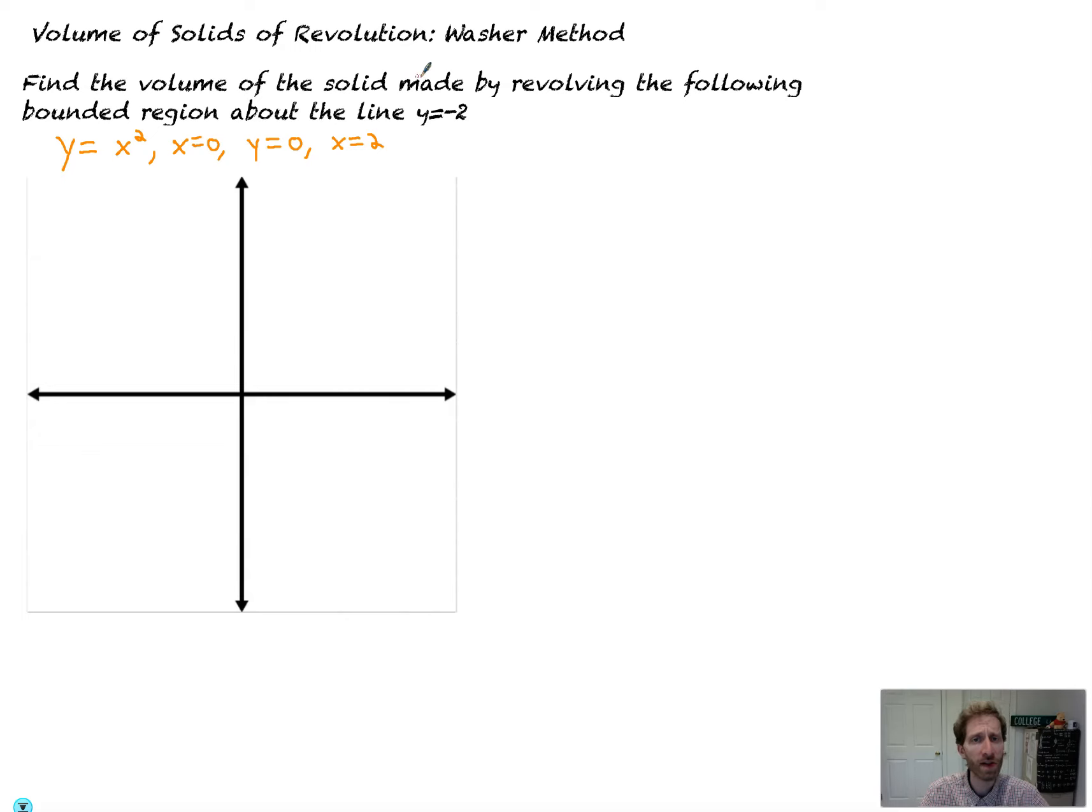So we're told, find the volume of the solid made by revolving the following bounded region about the line y equals negative two. Let's see what that's all about. So I've got y equals x squared, x equals zero. That's how I know to not draw out all of y equals x squared. Y equals zero, so that's bounded down here, and then x equals two. So it's kind of this curvy looking thing.